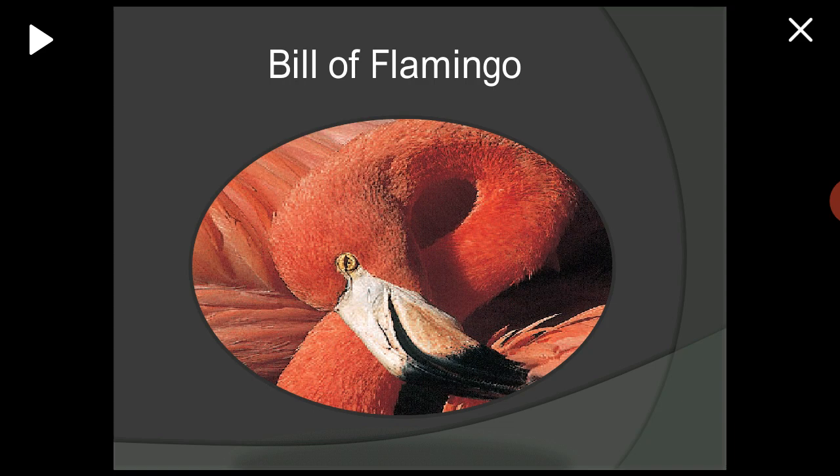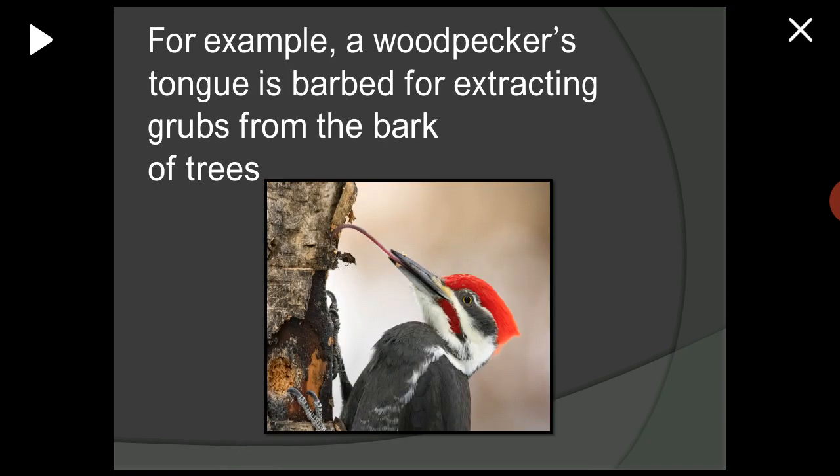The bill of the flamingo helps it strain food from water in a head-down feeding posture. Large bristles fringe the upper and lower mandibles. As water is sucked into the bill, larger particles are filtered and left outside. Inside the bill, tiny inner bristles filter smaller algae and animals, and the tongue removes food from the bristles.